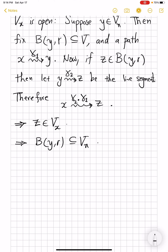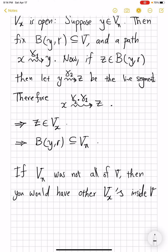So the set of all points that you can connect to x is an open, non-empty subset of your V. If Vₓ was not all of V, then you would have other Vₓ's inside V that would have no intersection with each other.